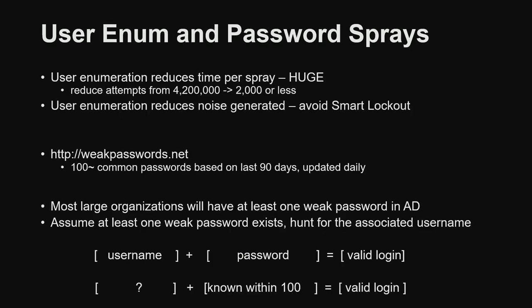Especially with password sprays — this is enormous. If you're on a pen test and you can't do user enumeration, you're going to have a bad time. If you're looking at JSmith format using census data from 2010, that's 4.2 million lines. If you can reduce that to 2,000 lines or less — just the valid users — now you're not wasting a day doing password sprays. You can rotate every hour without triggering lockouts. It wouldn't really be possible without user enumeration.